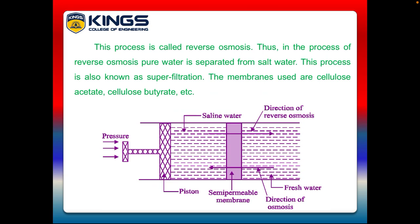Thus, in this process of reverse osmosis, pure water is separated from salt water. This process is also known as superfiltration. The membranes used are cellulose acetate, cellulose butyrate, etc.